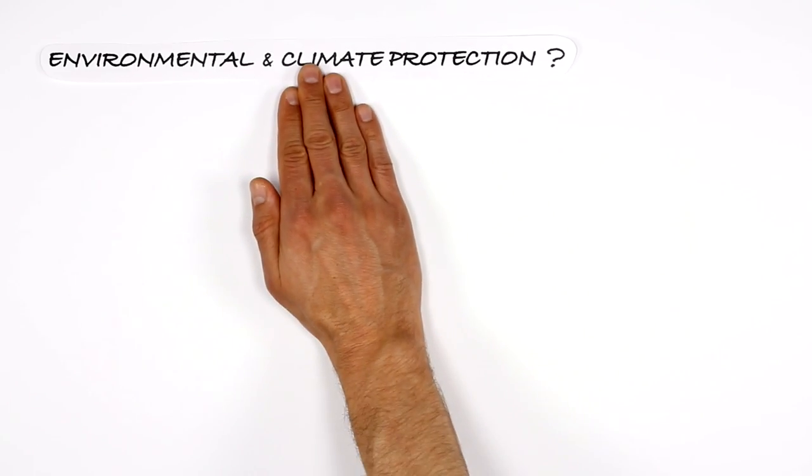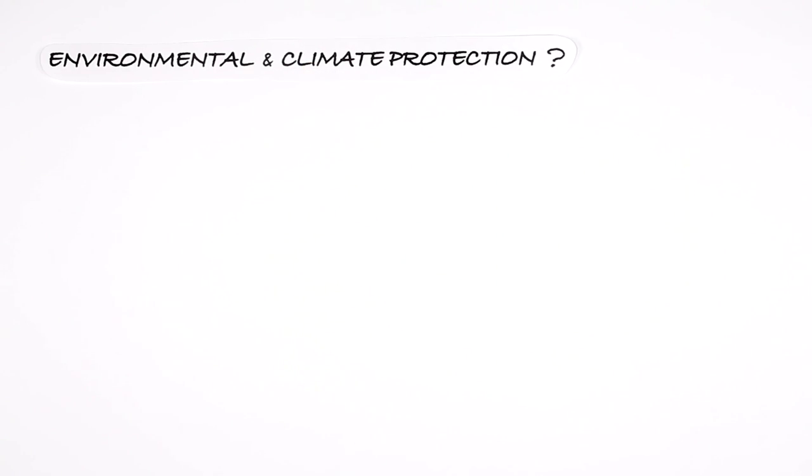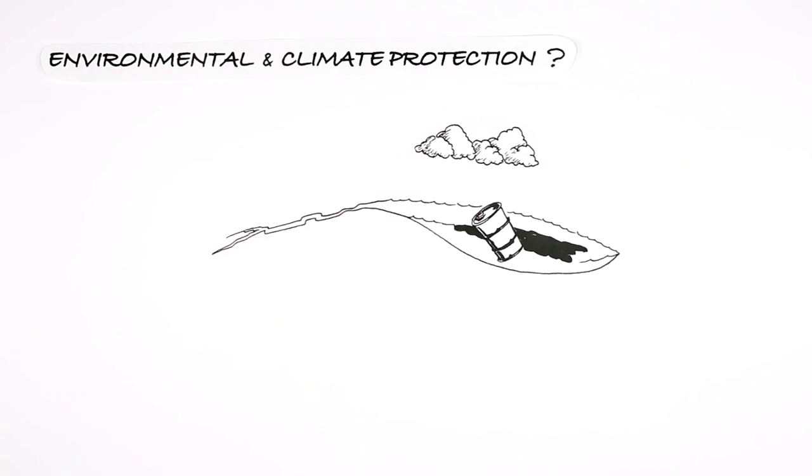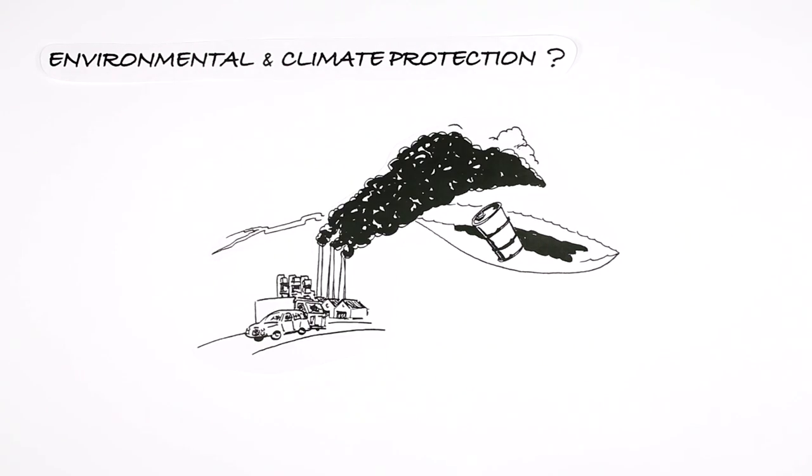Despite major international and national efforts in environmental and climate protection, serious problems remain: a high level of fresh water consumption, pollution of the world's oceans, chemical contamination of the environment, atmospheric aerosol pollution and ozone depletion, and biodiversity loss.